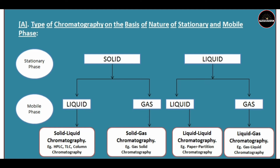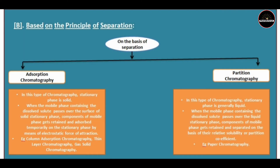On the basis of principle of separation, there are two types: adsorption chromatography and partition chromatography. In adsorption chromatography, the stationary phase is generally solid. When the mobile phase containing the dissolved solute passes over the solid stationary phase, components get adsorbed temporarily by electrostatic forces of attraction. Examples include column adsorption chromatography, TLC, and gas-solid chromatography.